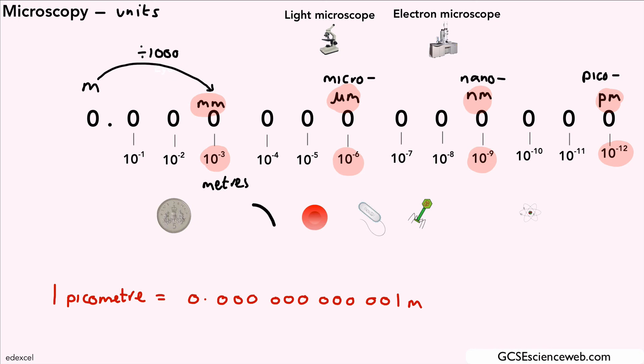We've got an atom, you might faintly be able to see that. But atoms are around about 10 to the minus 10 meters. Viruses, around about 10 to the minus 7 or minus 8. Bacteria tend to be around about 10 to the minus 6.